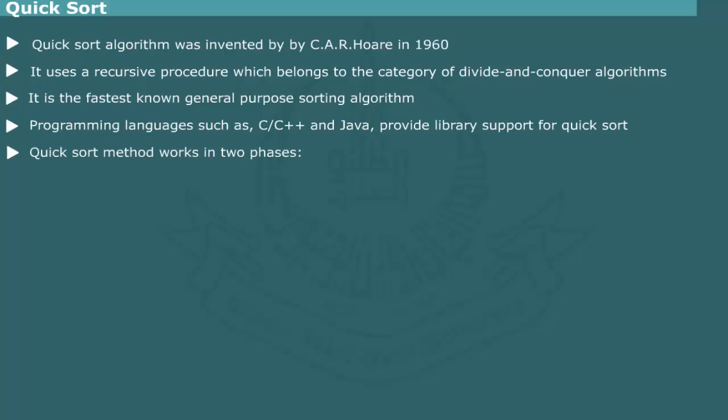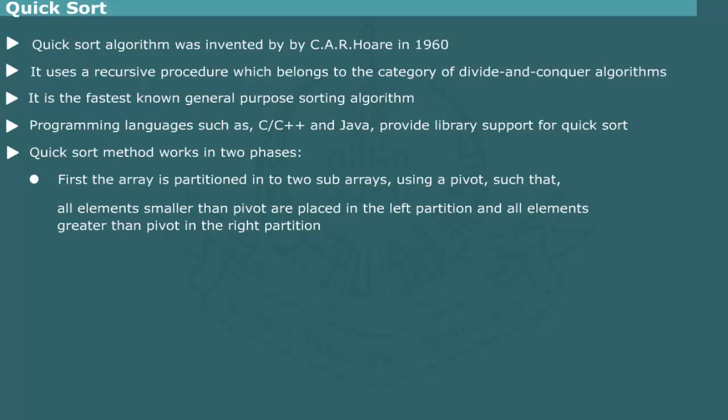The QuickSort method works in two phases. First, the array is partitioned into two sub-arrays using one of the array elements as pivot such that all elements to the left sub-array are smaller than pivot and all elements in the right sub-array are larger than the pivot.